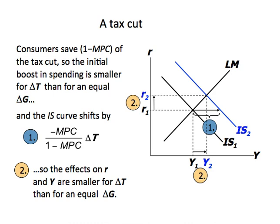Now let's take a look at another example of fiscal policy: a cut in taxes. If tax decreases, consumption rises, and the IS curve shifts by the same amount as equilibrium output increases in the Keynesian Cross model. The size of this shift equals minus MPC times delta T over 1 minus MPC. But according to the ISLM model, that is no longer the change in equilibrium output, because we must also take into account the money market condition. When there is a tax cut, consumption rises, and people's money demand increases as well.